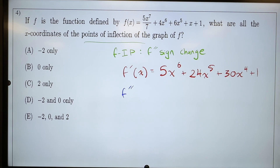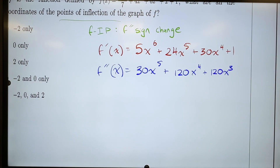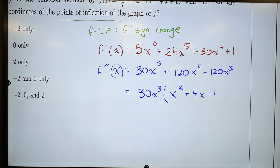Let's go ahead and do f double prime. 6 times 5 is 30, x goes down to the power of 5. 24 times 5 is 120, and this x is going to go down to the power of 4. Plus 30 times 4 is another 120, x goes down to the power of 3. And the derivative of that constant is 0. I know I'm going to be looking for inflection points, so let's factor this. I'm seeing a 30 and an x cubed in each term, so 30x cubed, and that's going to leave me with x squared plus 4x plus 4.